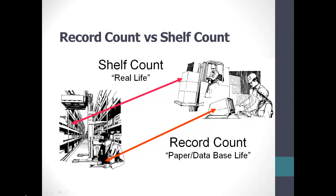We tell a customer we can't fulfill their order even though the items are actually here. An item physically leaving the building yet still appearing in-house because it hasn't been relieved from inventory reports also happens in batch software systems where the organization doesn't update its records often enough.